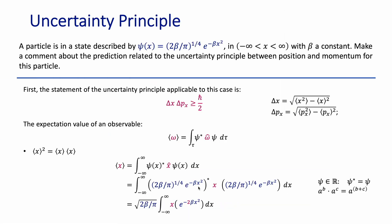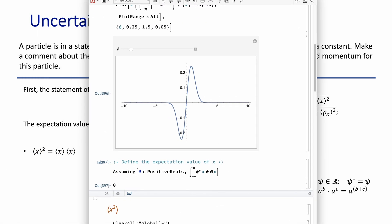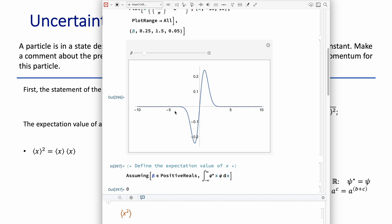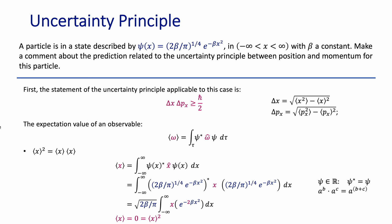Always plot to develop a physical intuition for your problem and understand what the wave function represents. Since the integral is zero, zero times a constant is zero, and the expectation value of position is zero. Therefore, the square of the expectation value is also zero. Physically, this means that over a large sampling of measurements, the average position of the particle will be exactly zero — the position-times-probability-density values average to that center point.